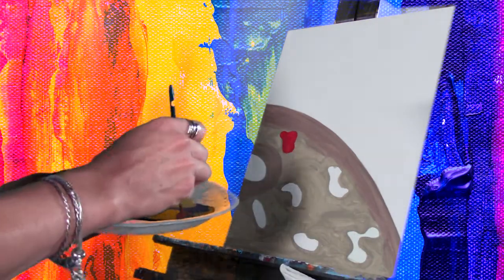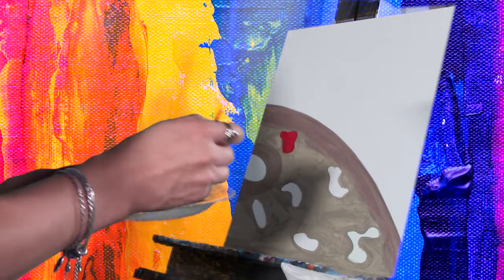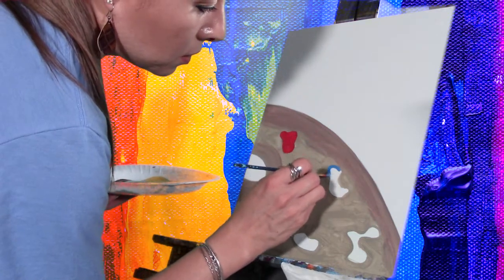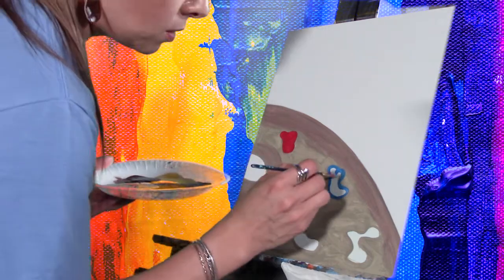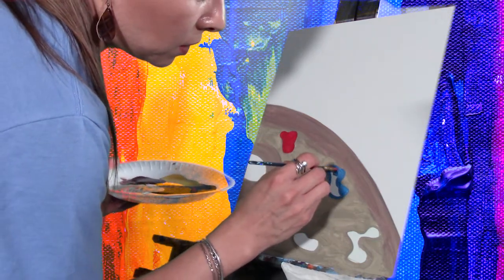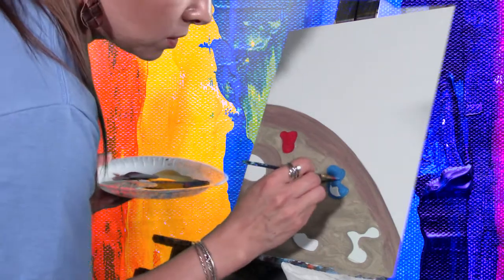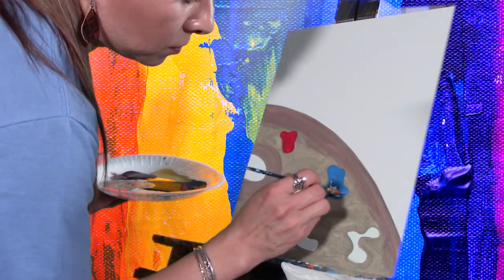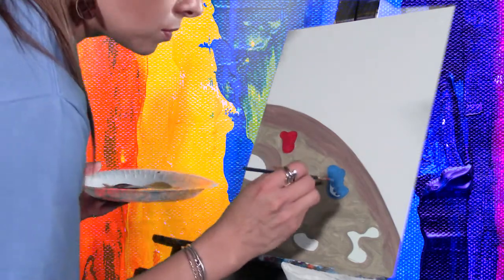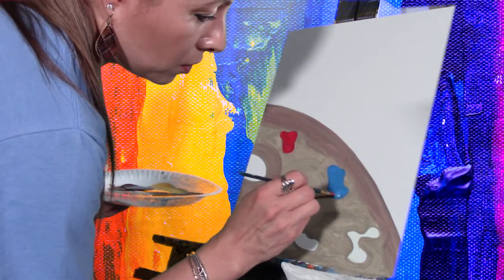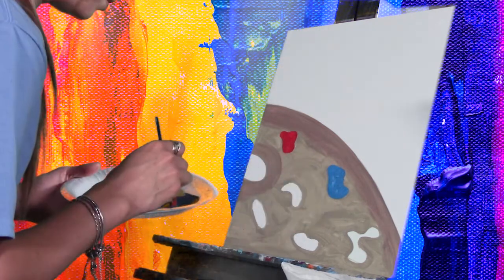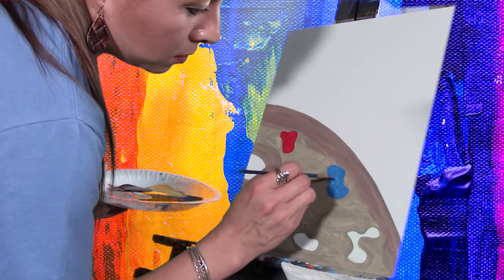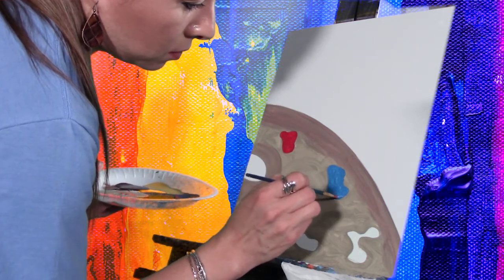Then the next color is blue. Same thing, let's trace it and fill it in. Dab it so you can get a lot of paint on there. Then clean your brush again and dry it.